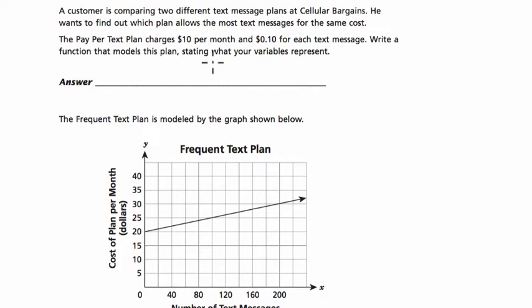We don't want to pay more for text messages. The pay-per-text plan charges $10 per month and adds $0.10 for each text message. Write a function or equation that models this plan, stating what your variables represent.